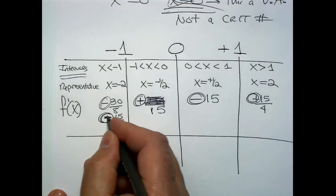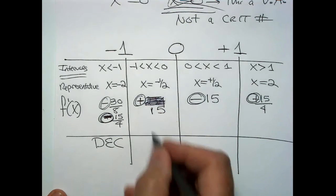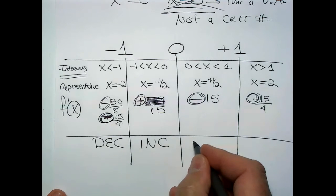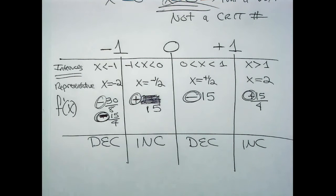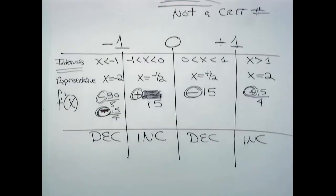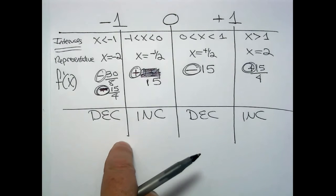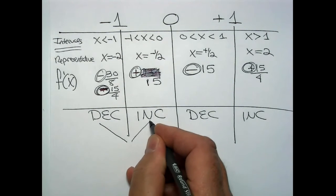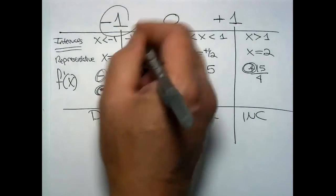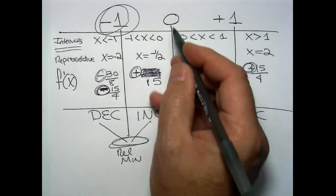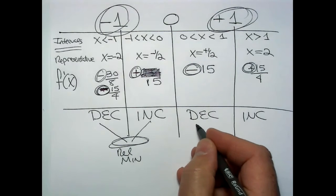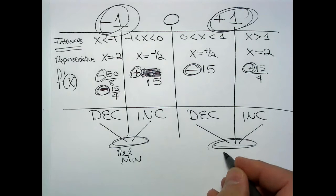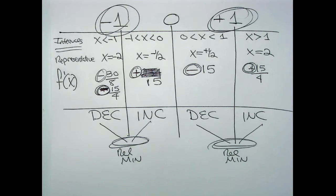Interpreting the signs: negative derivative means decreasing; positive means increasing; negative means decreasing; positive means increasing. Applying the first derivative test at x = −1: decreasing then increasing — draw the picture — that's a relative minimum. x = 0 is an asymptote, ignore it. At x = 1: decreasing then increasing — also a relative minimum. We have two relative minimums.